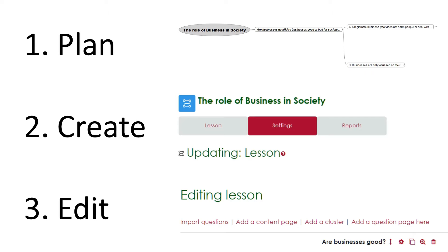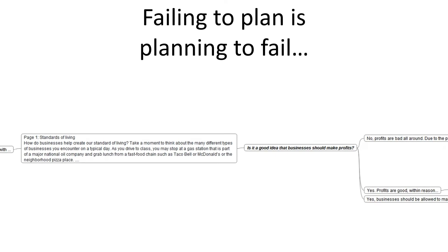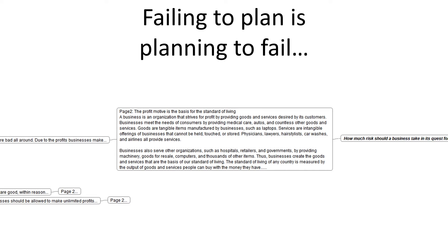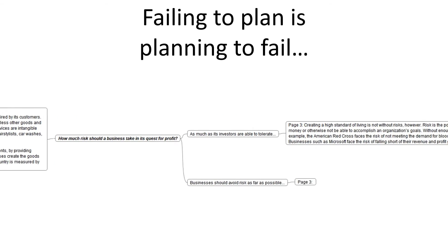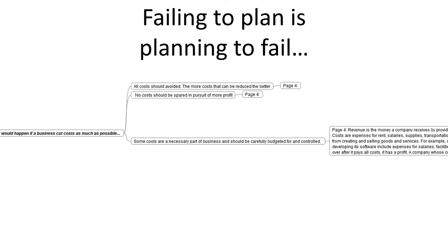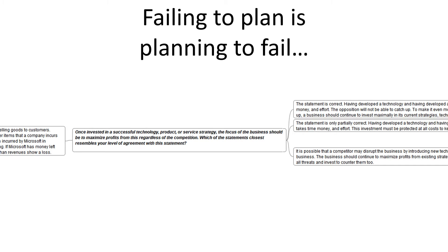Now let's break down the conceptual steps involved in creating a lesson activity in Moodle — a process that can be distilled into three key phases. Phase 1: Plan the lesson. In this initial step, it's crucial to meticulously plan your lesson. Map out the relationships between different content and question pages in as much detail as possible. Personally, I prefer using FreeMind, but any mapping tool should suffice for this purpose, even pen and paper.